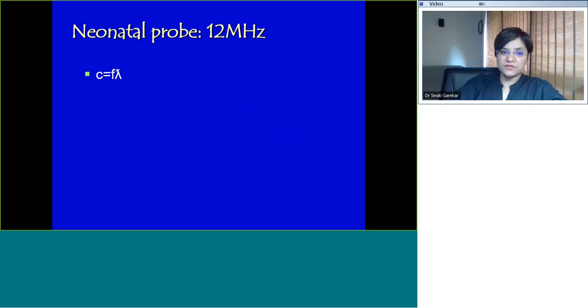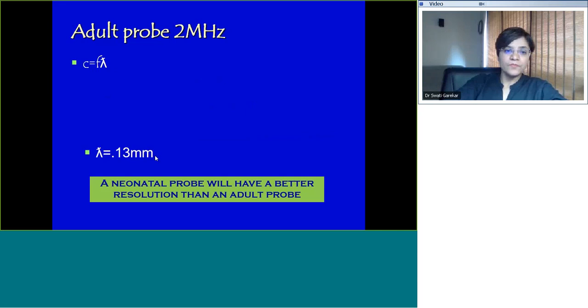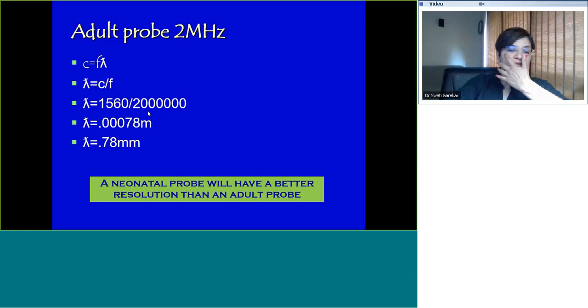Let's look at the neonatal probe, 12 megahertz. You put in the numbers. Lambda is c by f. Lambda is 1560 divided by 12 followed by six zeros, giving you 0.13 mm. While the adult probe, you put in 2 megahertz and you get 0.78 mm. A neonatal probe with lambda of 0.1 will have better resolution than an adult probe with 0.7. This is the whole basis for that.